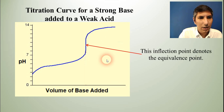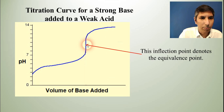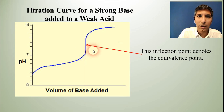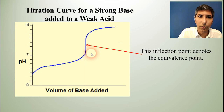I want you to notice that, just like we said before, the inflection point denotes the equivalence point. Now even if they didn't tell you, you should be able to tell that this is a strong base–weak acid titration.